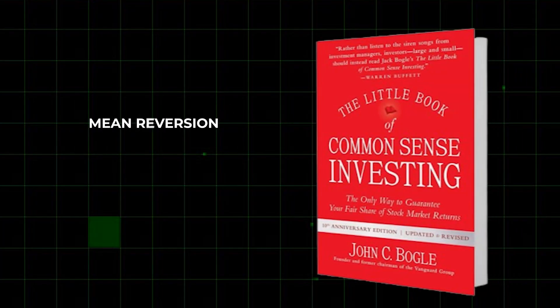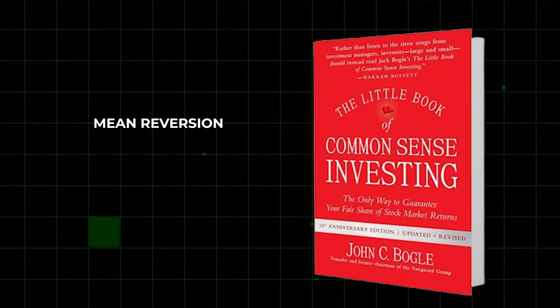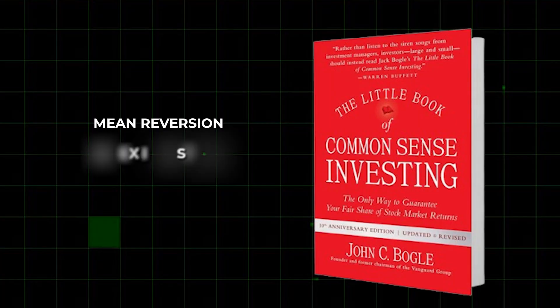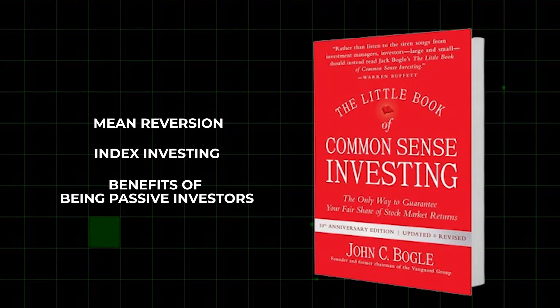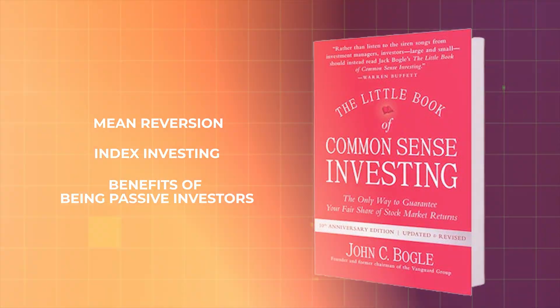It also talks about mean reversion, which is another common trait that took me a while to pick up but would have been addressed immediately by this book. It covers index investing and the benefits of being passive. This would have been a great starting read in my role as an investment researcher — I only just read it, and while I already knew a lot of the concepts by then, I wish I'd learned them earlier.